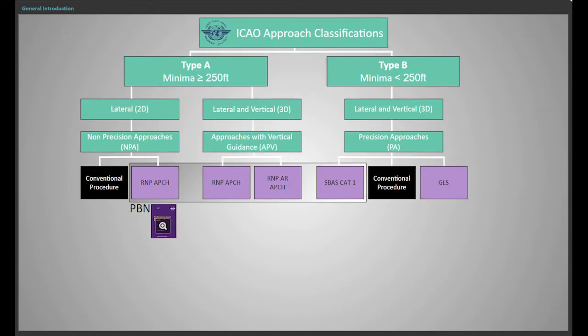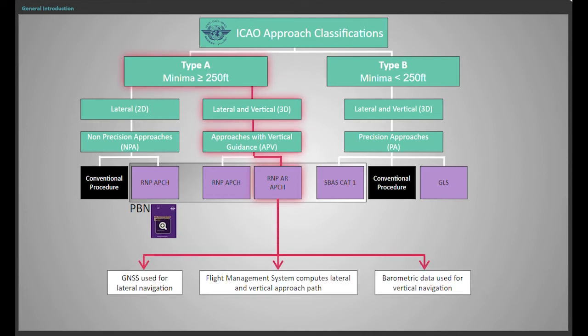Required Navigation Performance with Authorisation Required Approaches, RNP AR, are instrument approach procedures categorised by ICAO as Type A 3D Approaches. Onboard navigation — GNSS together with IRS — is used for lateral navigation, and the vertical final approach is provided by the FMS based on barometric data.